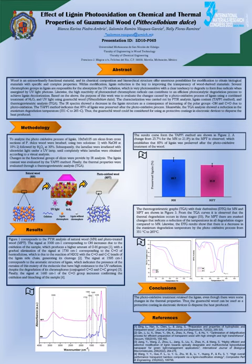The results of the thermal analysis show a reduction in the maximum degradation temperature from 351 degrees Celsius to 265 degrees Celsius. According to the results obtained, Guamachil Wood could be considered for use as a protective coating in electronic devices to disperse the heat produced.